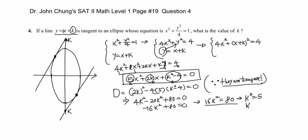From 16k squared equals 80, we get k squared equals 5, so k equals plus or minus root 5. The two values are positive root 5 and negative root 5.